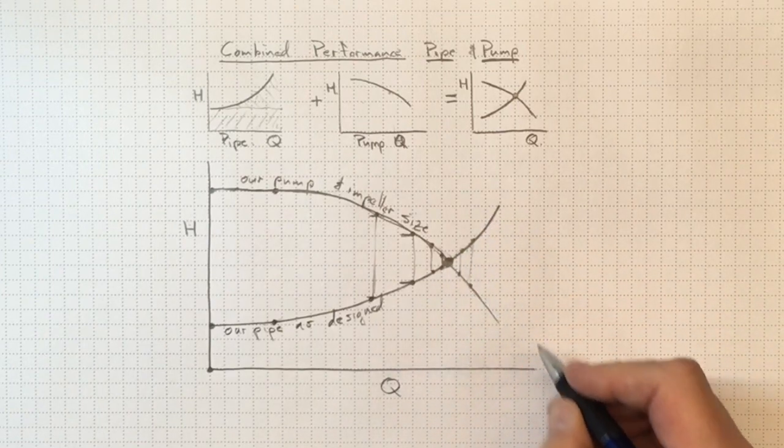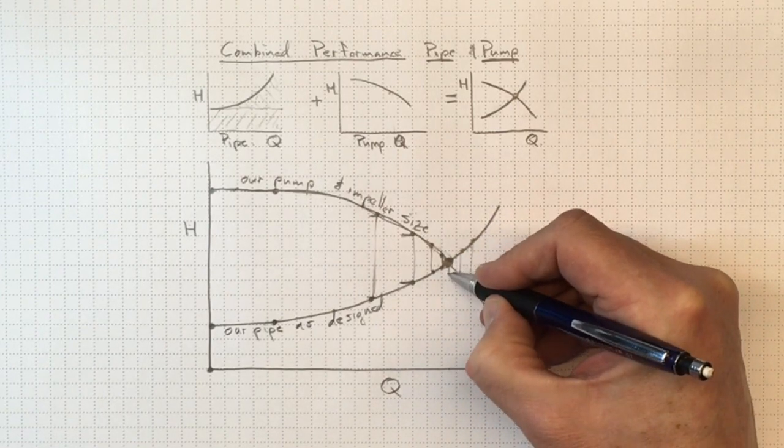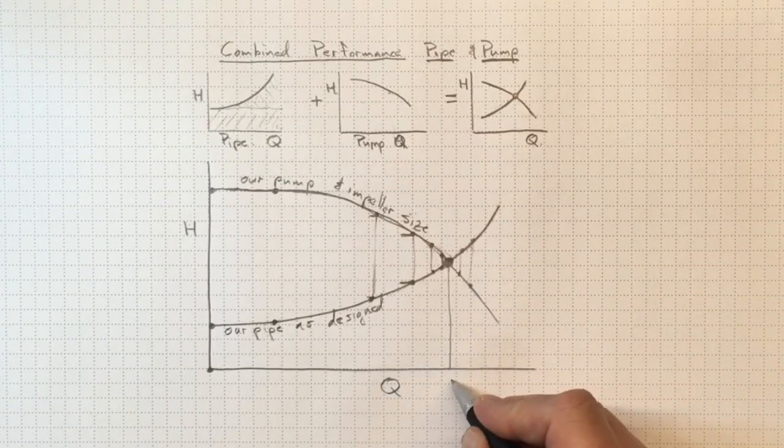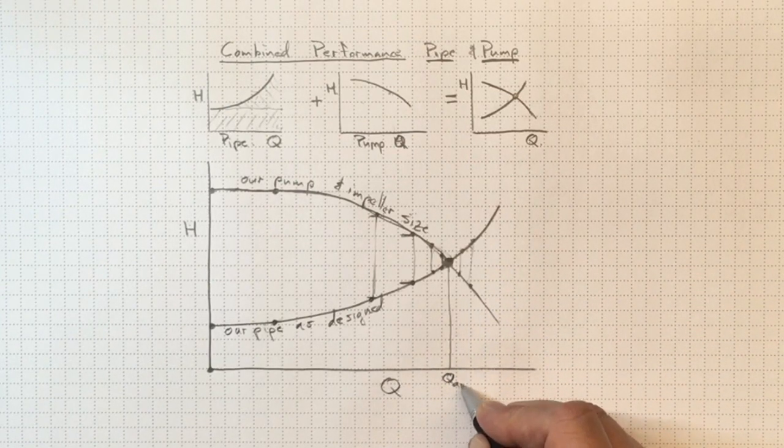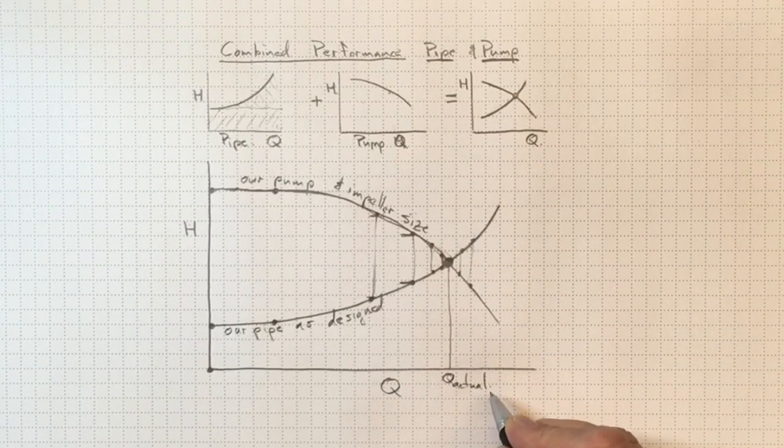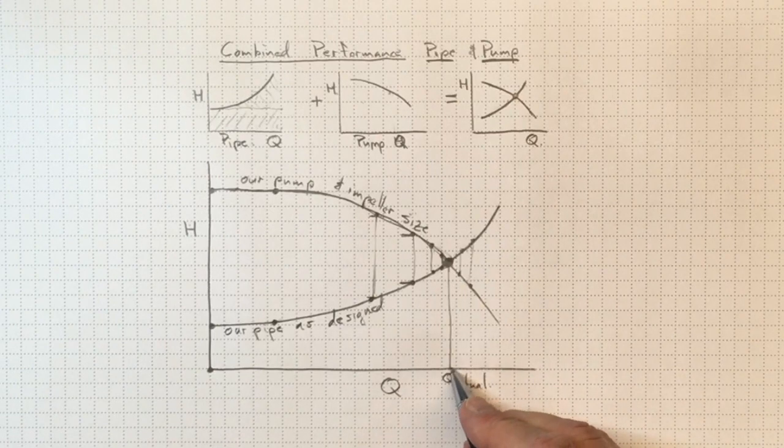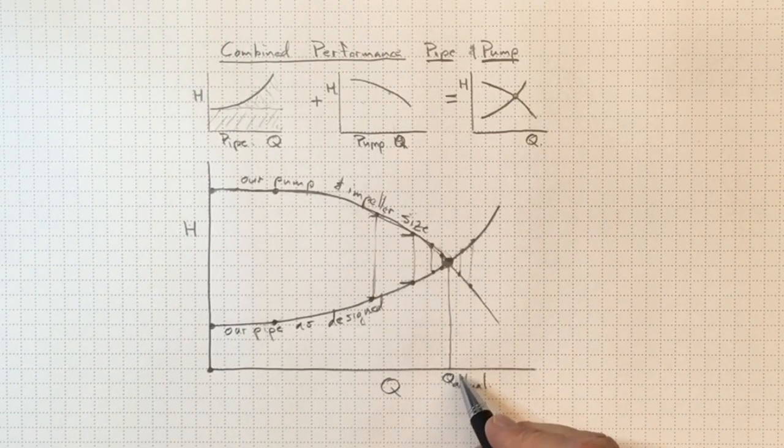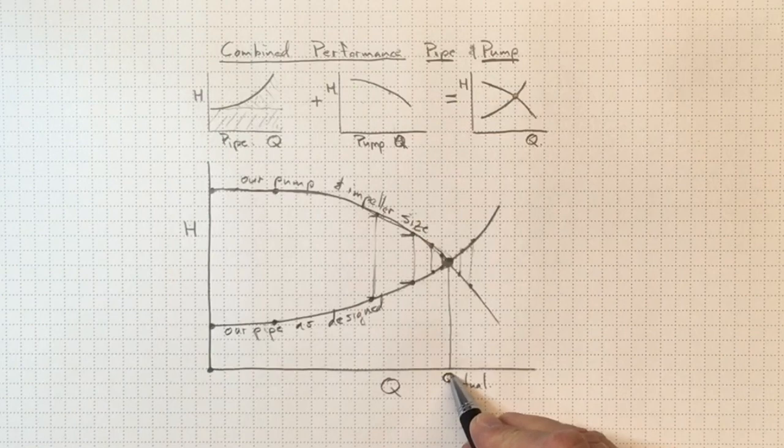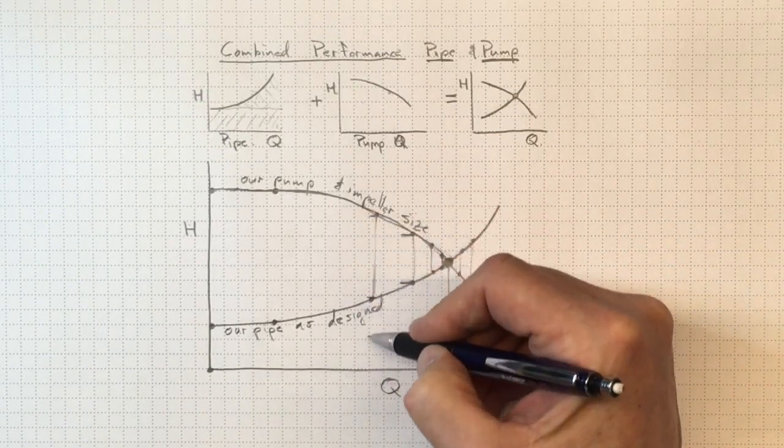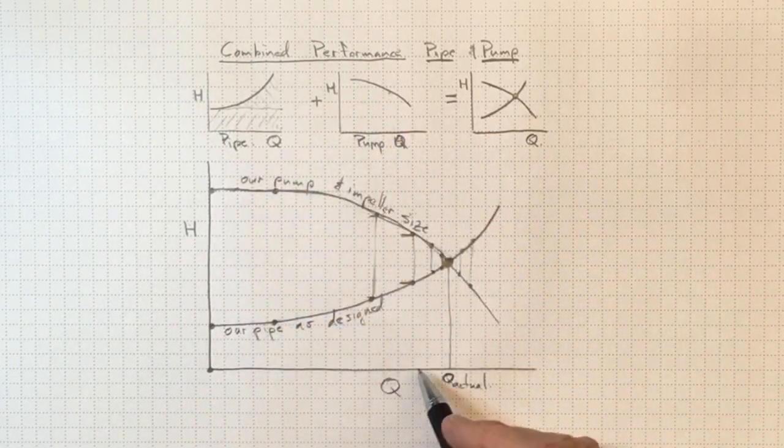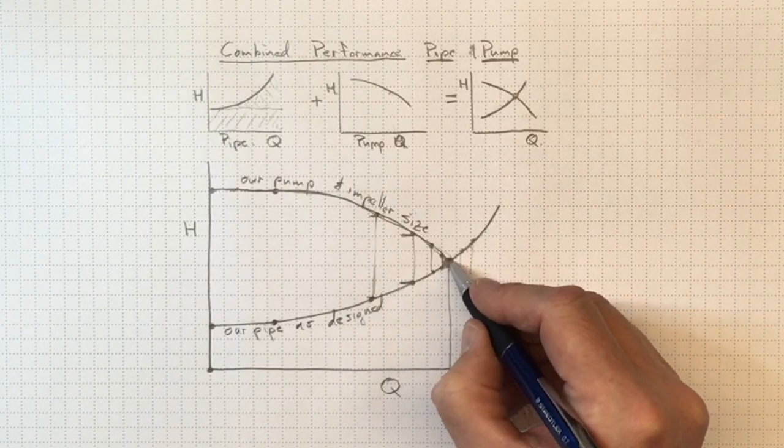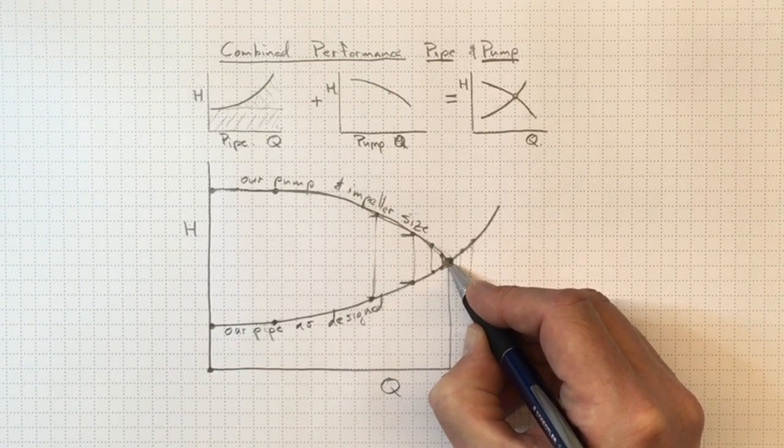And once we know what that operating point is, we can figure out what our actual flow is going to be that goes through the piping system. It may not be what we designed for, it may be something rather different than that. We might have designed for over here, but because we picked a pump that was somewhat oversized, if we just switch things on, we wind up operating out here.